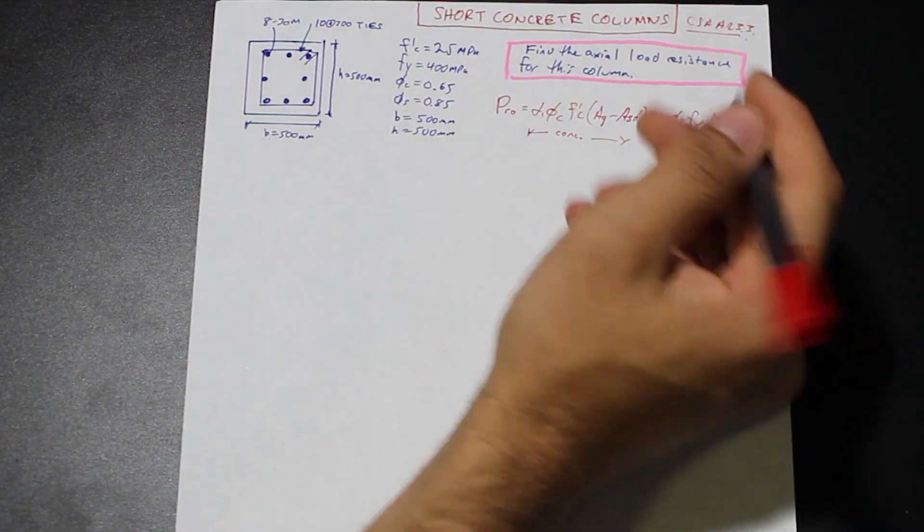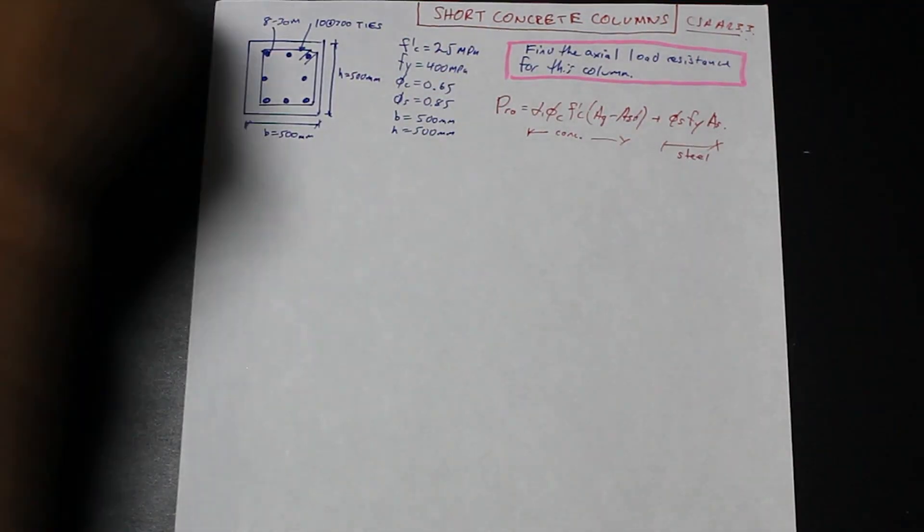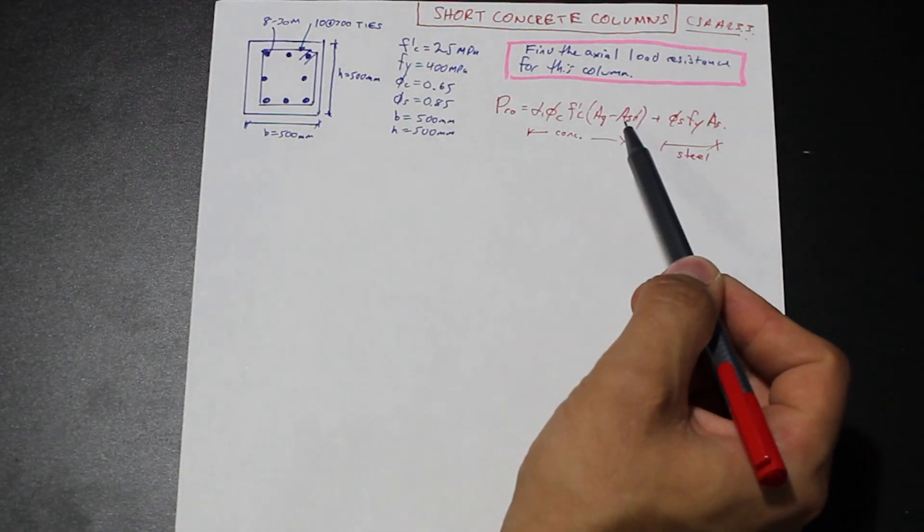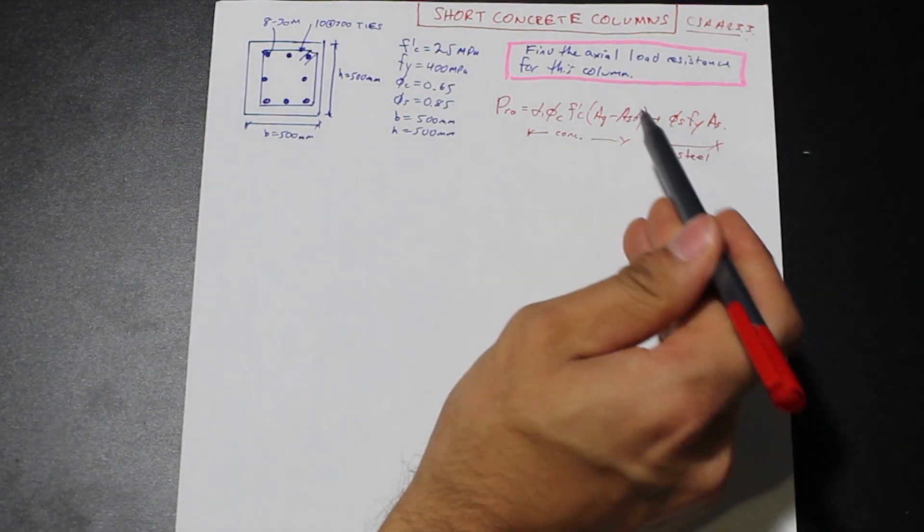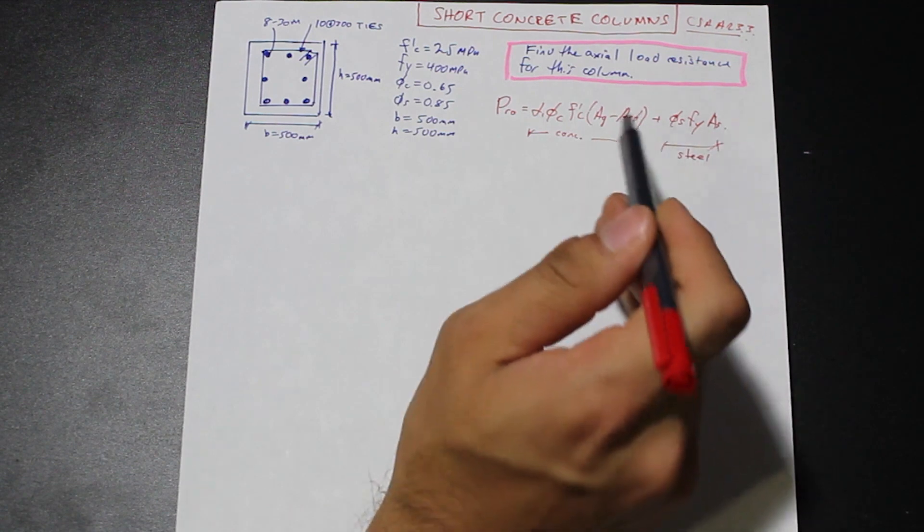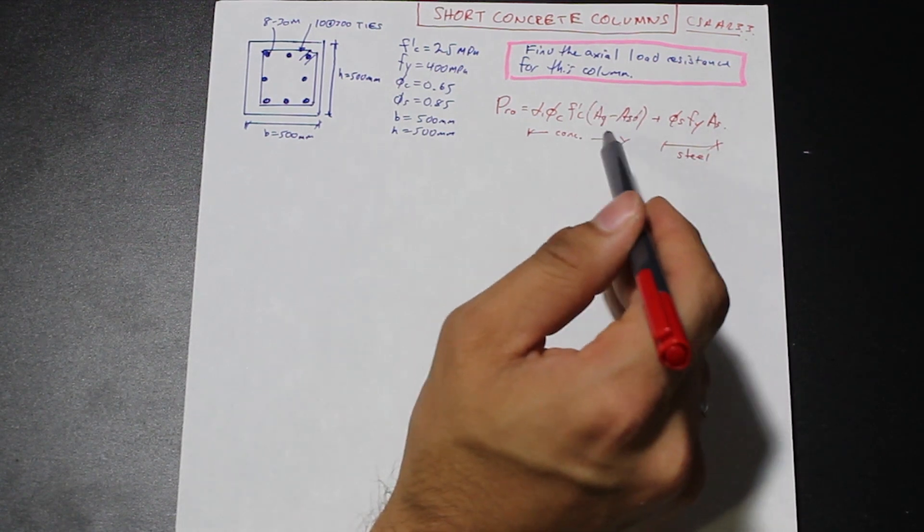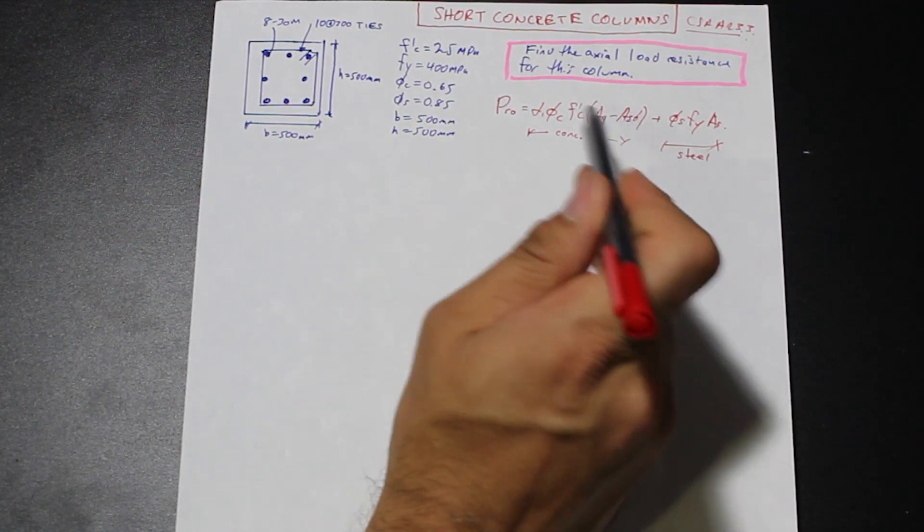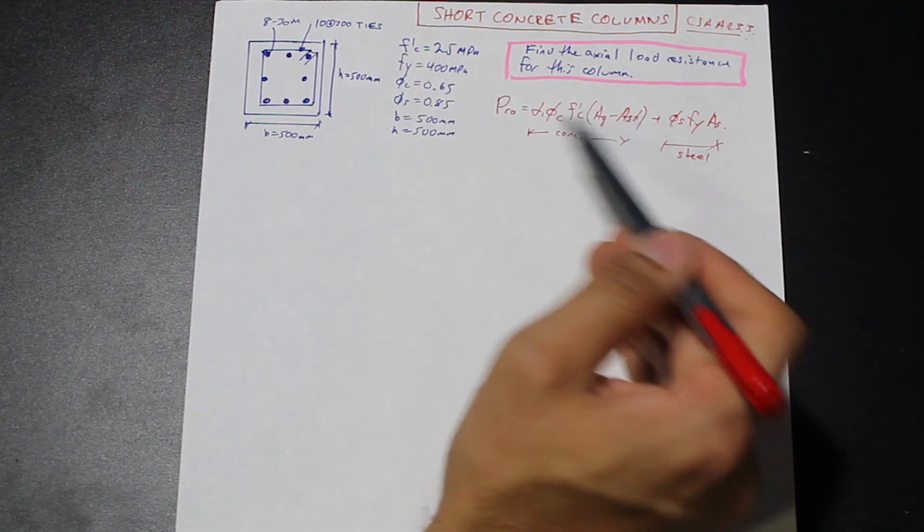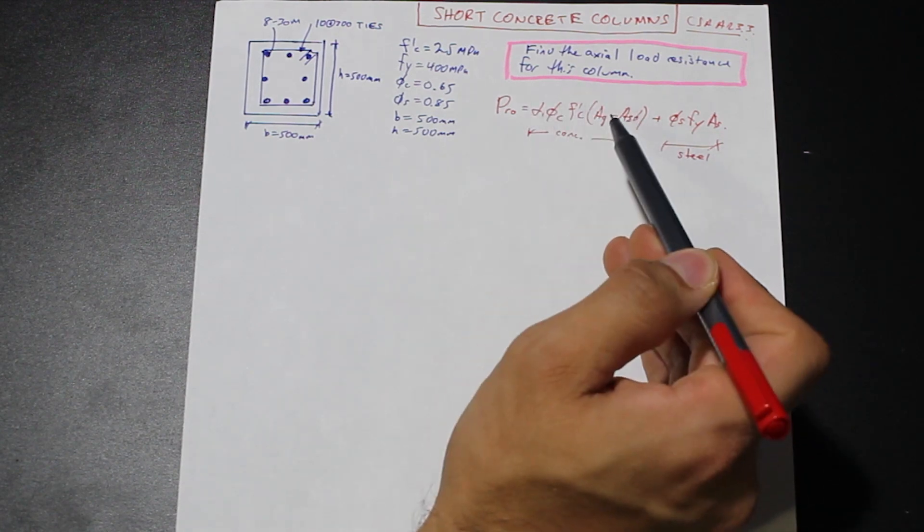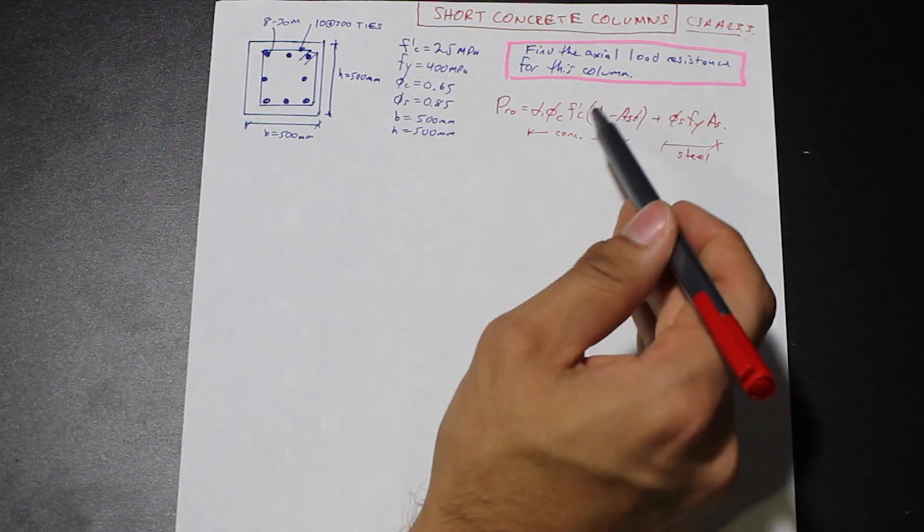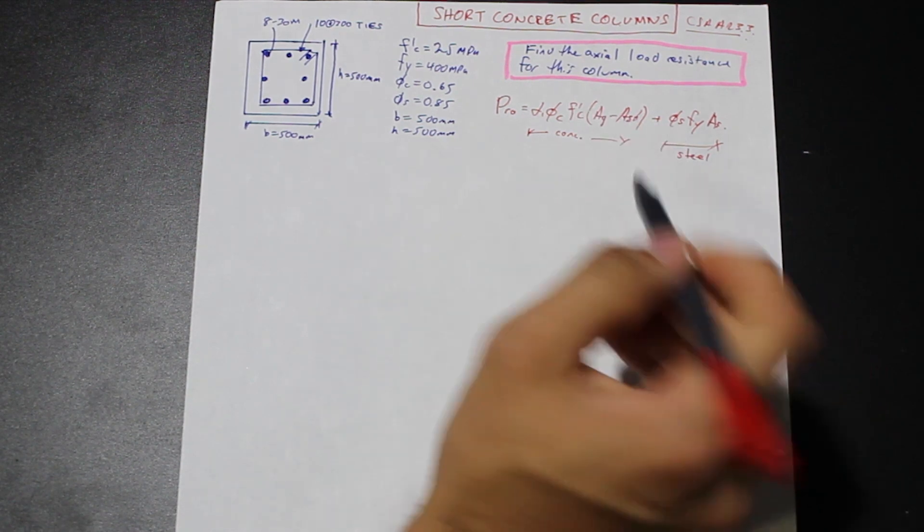So we have two terms here. Now in practical terms, this term here where we subtract the gross area from the area of steel is kind of an unnecessary step and is really never performed if you're doing actual calculations, because the difference is very, very negligible. So we're trying to find the net area of concrete, which is the area of concrete minus the area of steel. Usually, we're just going to use area gross here.